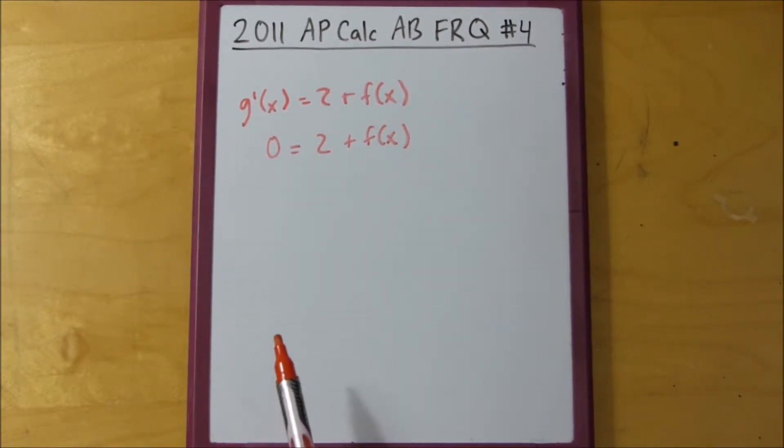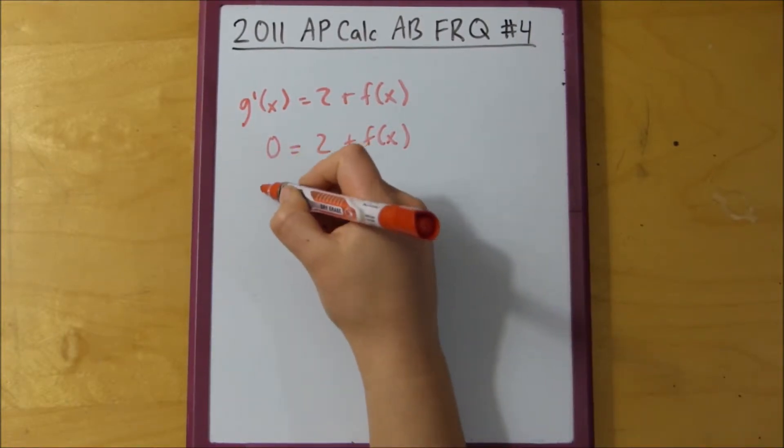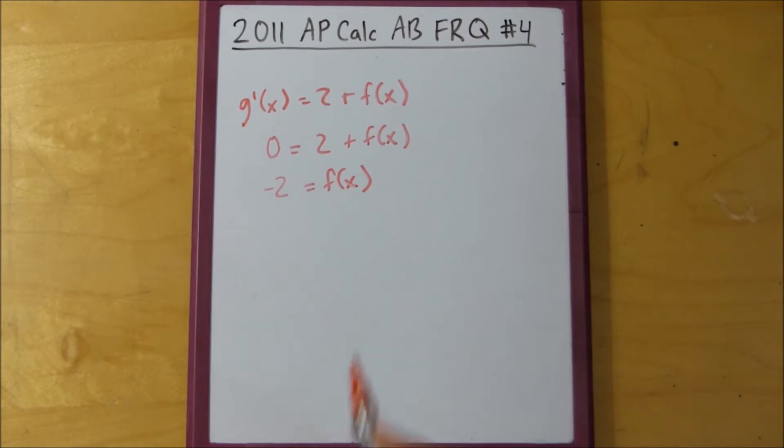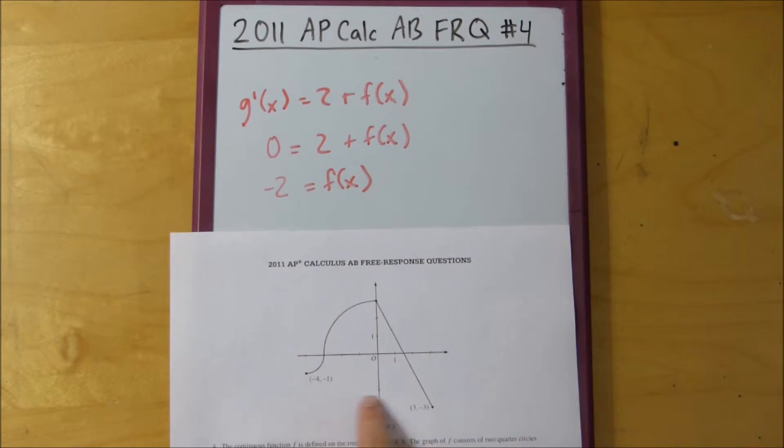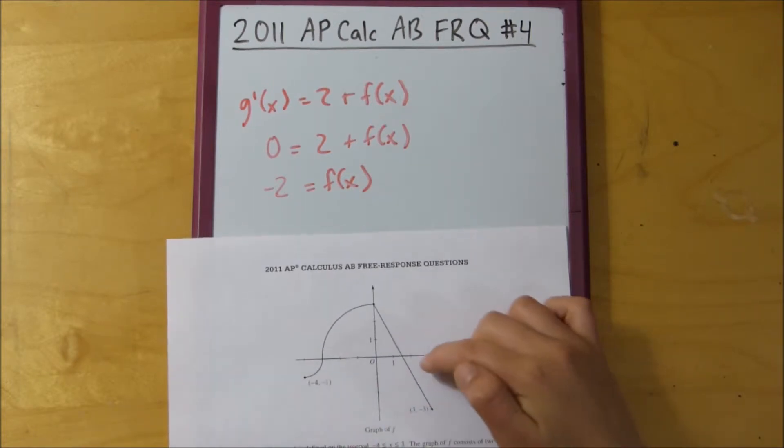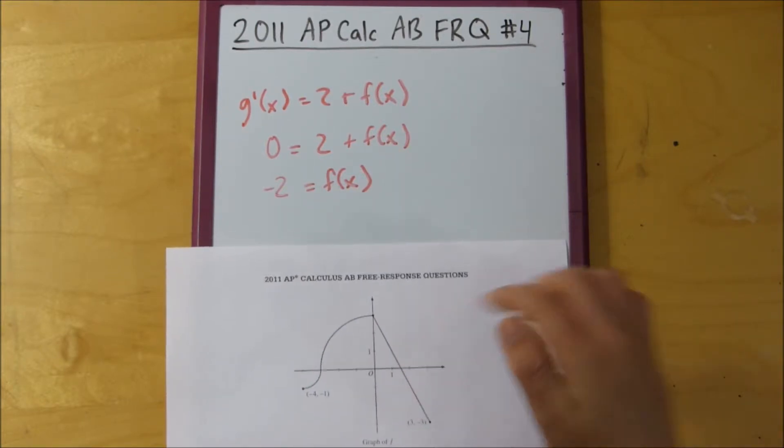And then, we can simplify this further by subtracting 2 from both sides, and negative 2 equals f of x. So, the places where g has a critical point, where the maxes and mins occur, is when f of x equals negative 2. So, we see where negative 2 is, the line y equals negative 2, where it intersects with the graph, and it intersects right in between 2 and 3. So, I would say that this is 2 and a half, x equals 2 and a half. If you're not certain about this, you can always find this slope and then plug into point slope form, but this is 2 and a half.